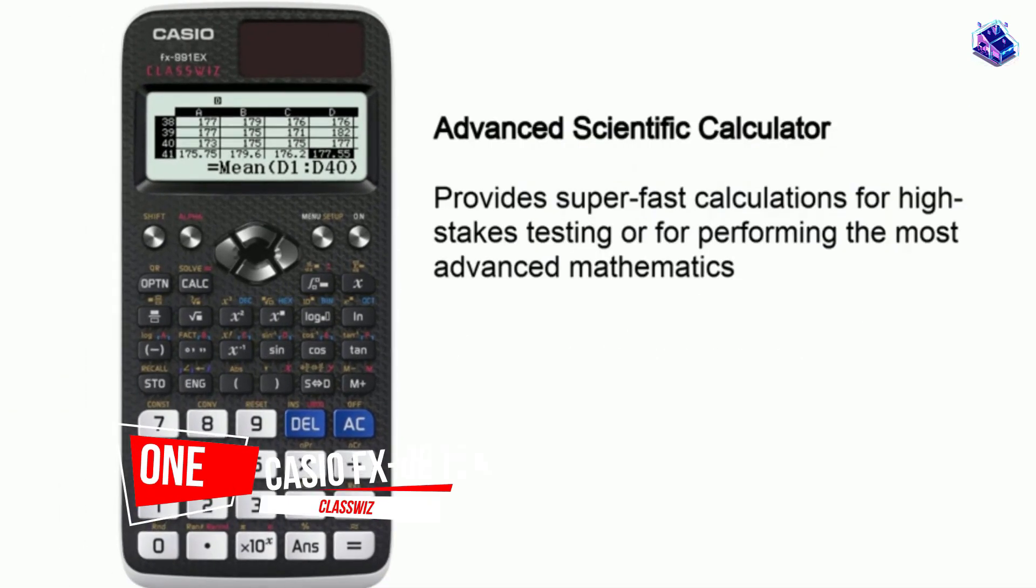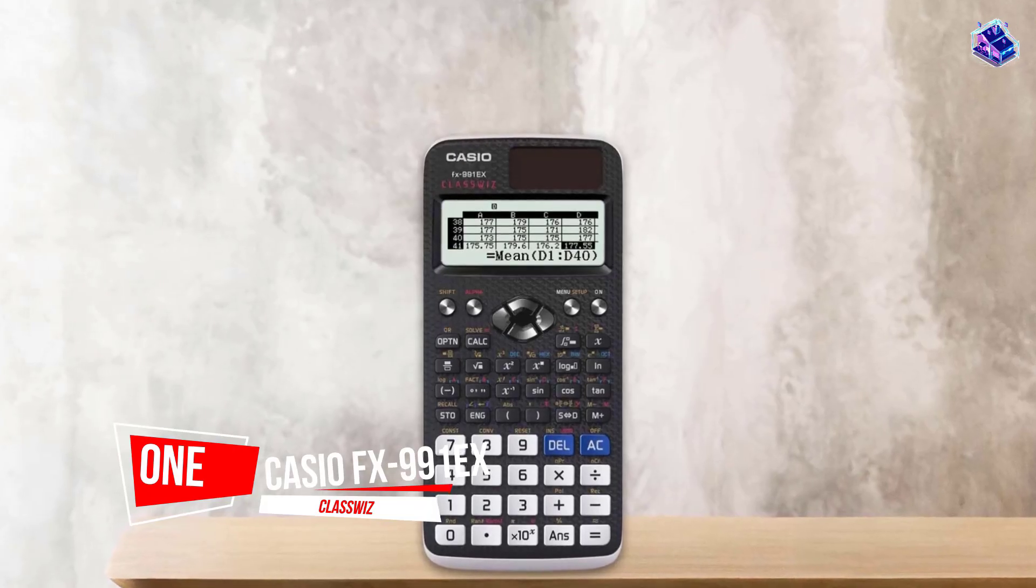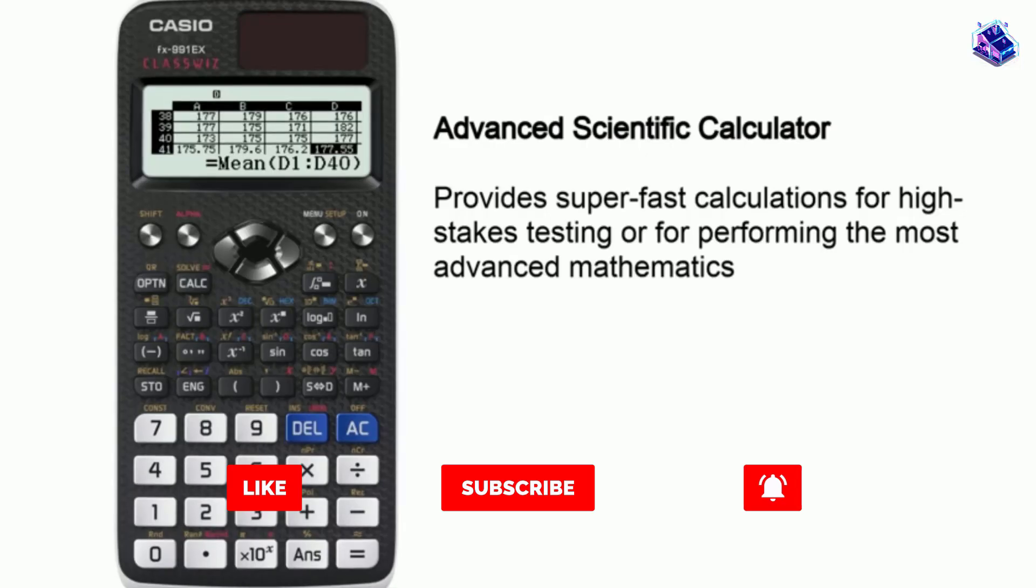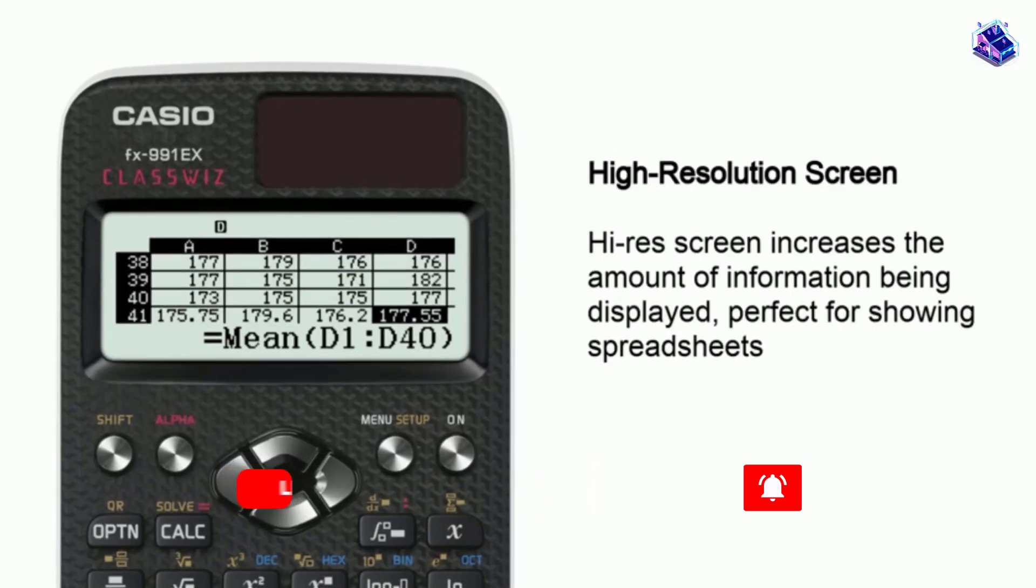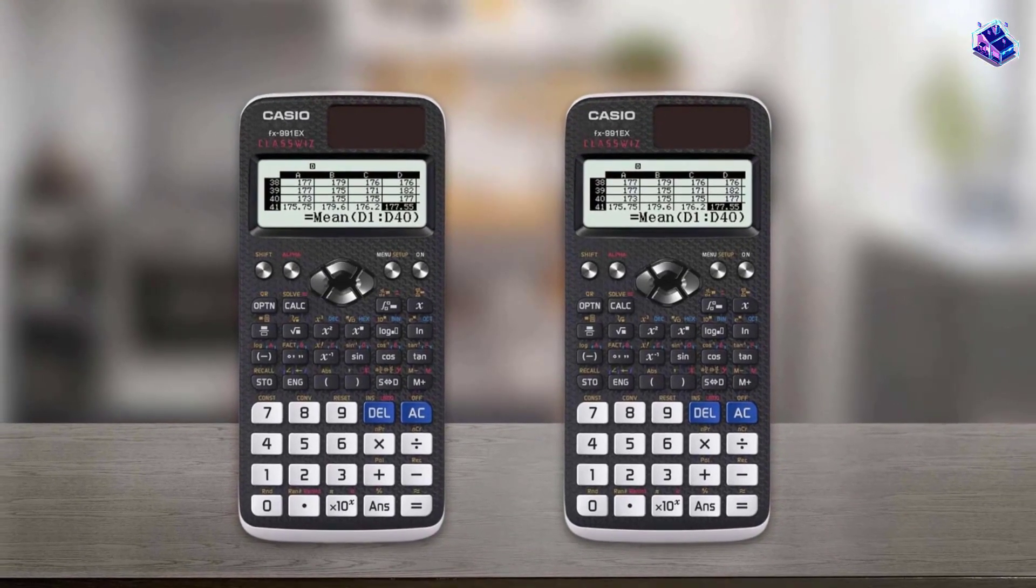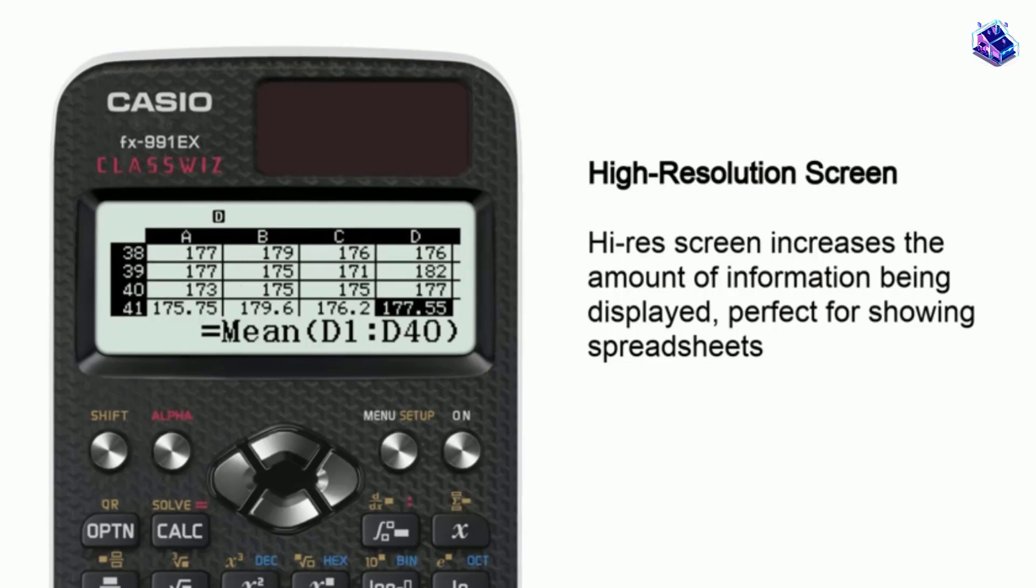Number one: most popular Casio FX-991 EX Class, which I quickly fell in love with. This calculator, for me as a very visual learner, was perfect. It has a significantly improved screen resolution than its predecessor.